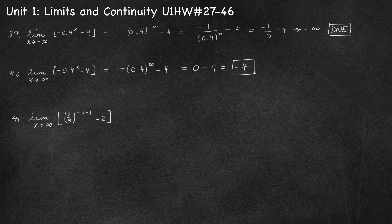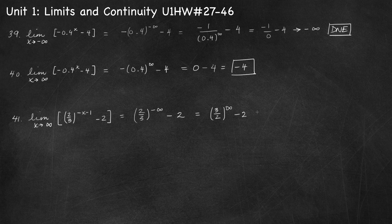Number 41, limit as x approaches infinity of 2 thirds to the negative x minus 1 minus 2. Substituting: 2 thirds to the negative infinity minus 1, and negative infinity minus 1 is still negative infinity. Rewriting without a negative exponent: 3 over 2 to the power infinity minus 2. Since 3 over 2 is greater than 1, raising it to the power infinity approaches infinity. Infinity minus 2 is still infinity, so the limit does not exist.